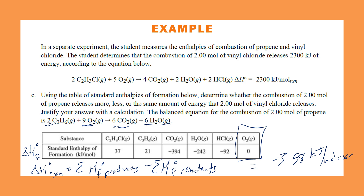To correctly answer the question: the combustion of two moles of propene releases more energy than two moles of vinyl chloride. This question is worth two points — one for correctly calculating using heats of formation, and one for correctly stating that two moles of propene releases more energy than two moles of vinyl chloride.